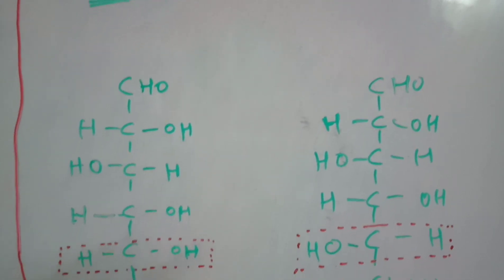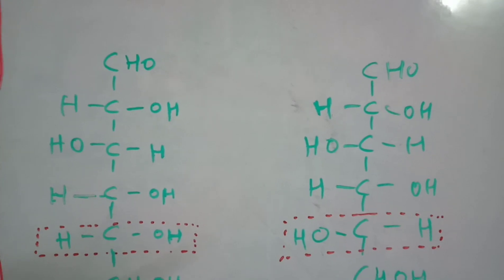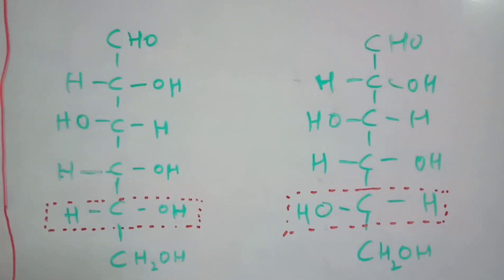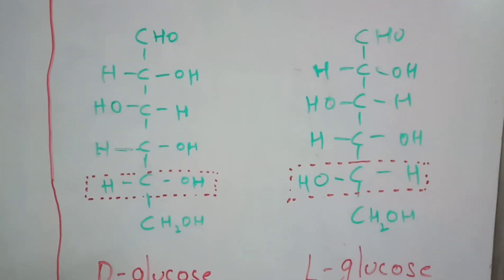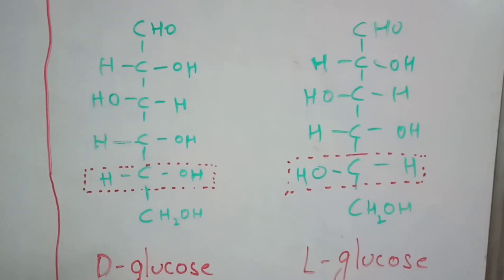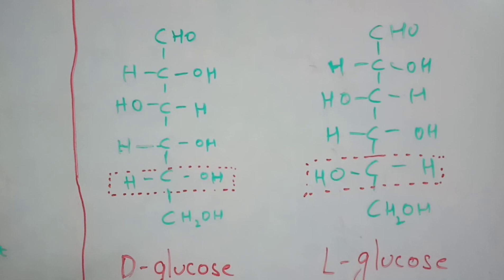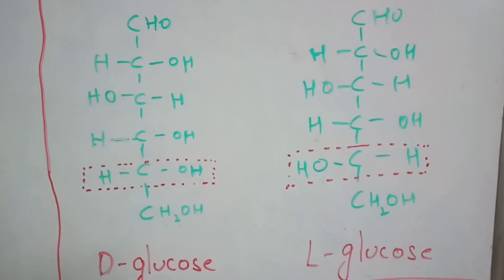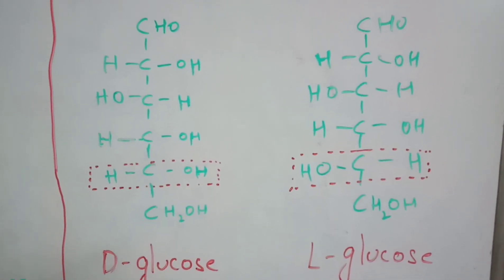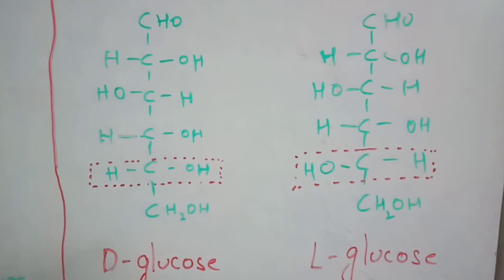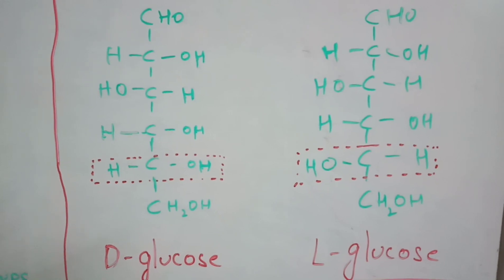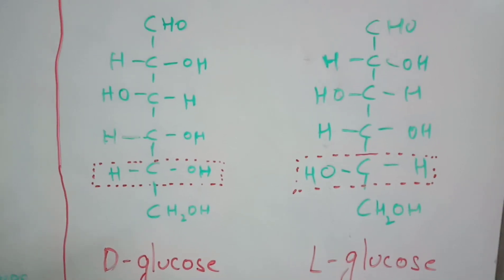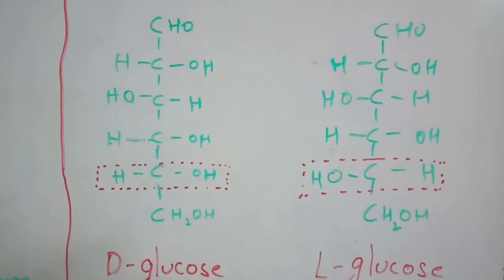Glucose is a six-carbon compound, with carbons numbered one through six. Looking at the fifth carbon of D-glucose: on the left side there is H and on the right side there is an OH (alcohol group). In L-glucose, this is reversed — OH is on the left and H is on the right. This is the main difference between D-glucose and L-glucose: the groups at C5 are swapped, yet the empirical formula remains the same.